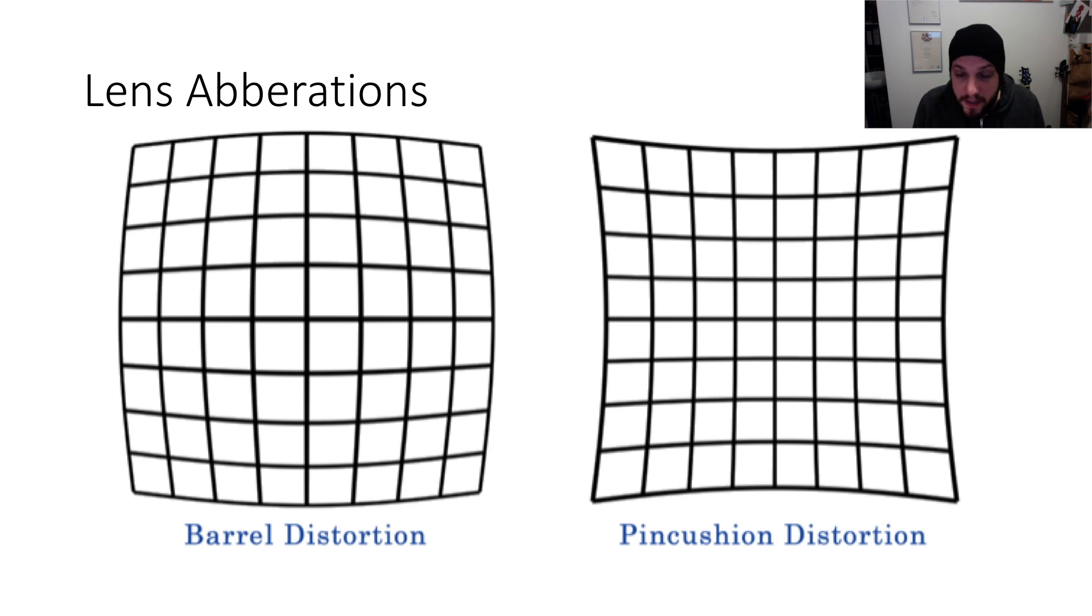And a second is pin cushion distortion, where the opposite happens. So lines away from the center curve towards the center. This is such that their focal point, when the line is above the center, the focal point is above that line. And lines below the center curve such that their focal point is below.